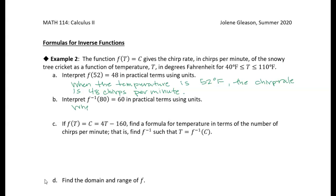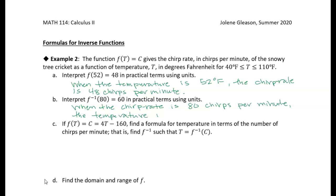This is telling us that when the chirp rate is 80 chirps per minute, the temperature is 60 degrees Fahrenheit — because the inverse function swaps the inputs and the outputs. So the inverse is going to take chirp rate and give us temperature, because the original function took temperature and gave us chirp rate.